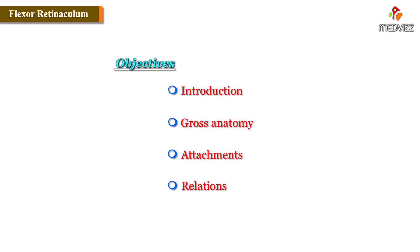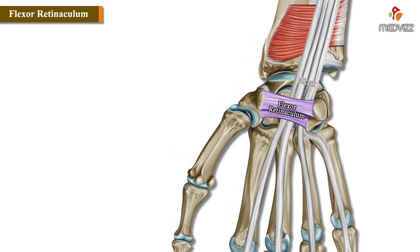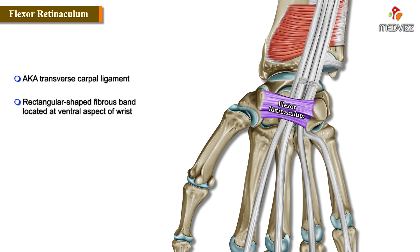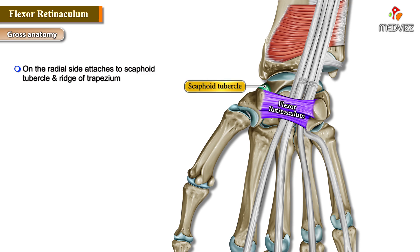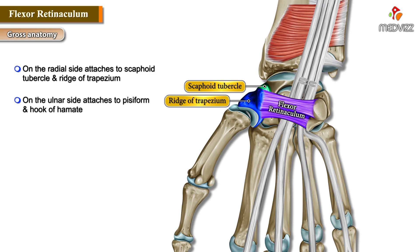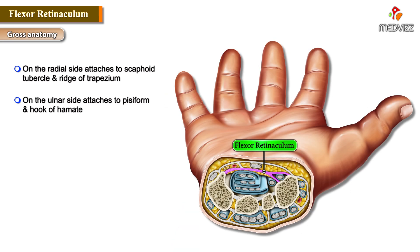The flexor retinaculum, also known as the transverse carpal ligament, is a rectangular-shaped fibrous band located at the ventral aspect of the wrist. On the radial side, it attaches to the scaphoid tubercle and the ridge of the trapezium. On the ulnar side, it attaches to the pisiform and the hook of the hamate.